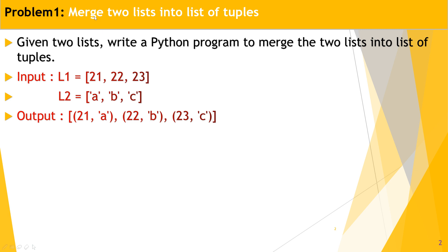To clarify: tuples are immutable and the goal is to merge two lists into a single list of tuples. I hope you understand the problem statement. Let's move on to the code part.